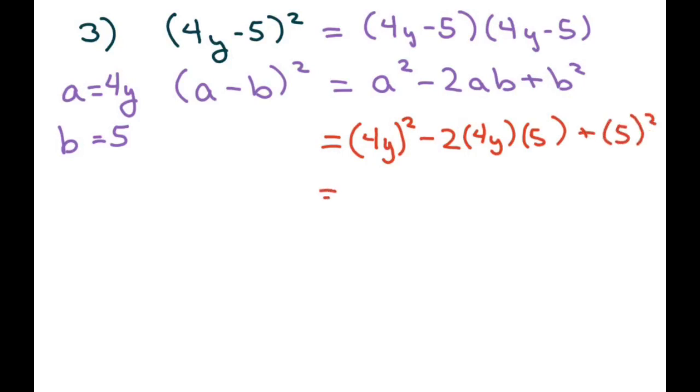And then just simplify this. This would be 16, because you square the 4 and the y. 16y squared. And this one, go ahead and put your negative. Multiply your coefficients. So that's 20 times 2, that's 40. And don't forget your y. And then plus 5 squared is 25.